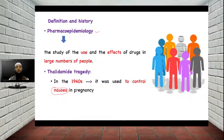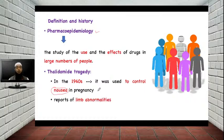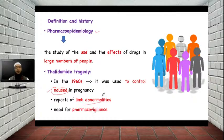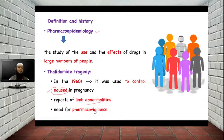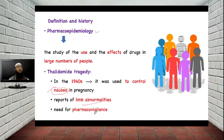Thalidomide in 1960 was used to control nausea in pregnancy. Earlier there was no report of any teratogenic effect — any effect produced on the growing fetus in the mother's womb. But in 1960 when this drug was first given to pregnant women for treatment of nausea, it was observed that there were reports of limb abnormalities. Their newborn babies suffered from limb abnormalities, and it was then thought that there is a need for pharmacovigilance.